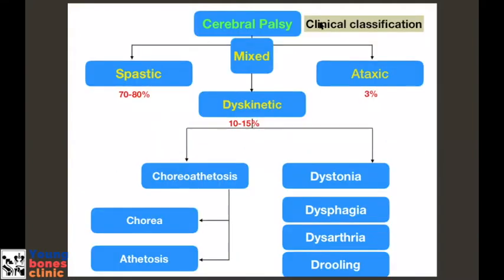Clinically, cerebral palsy is divided into three types. The spastic type is the most common, around 70 to 80 percent. Dyskinetic type is around 10 to 15 percent and ataxic type is around 3 percent. Mixed type has a component of both spasticity and dyskinesia, especially dystonia. Dyskinetic types can be choreoathetosis, dystonia, dysphagia, and dysarthria.